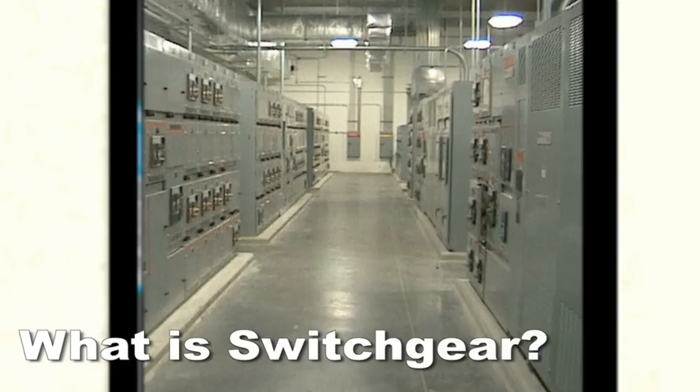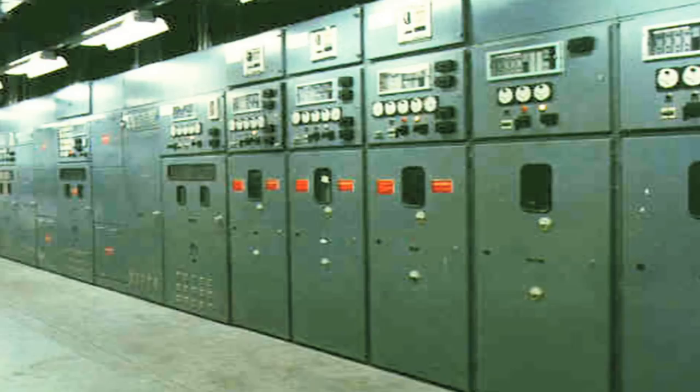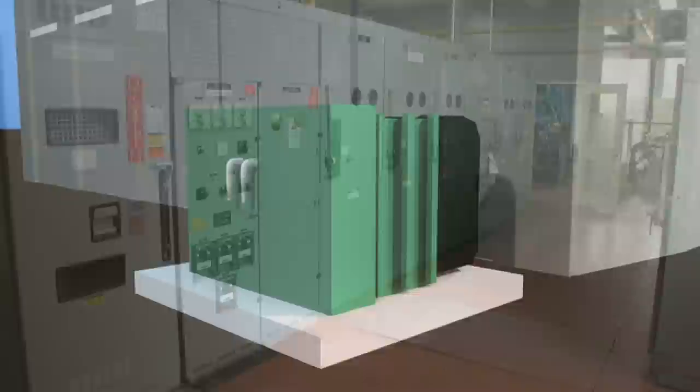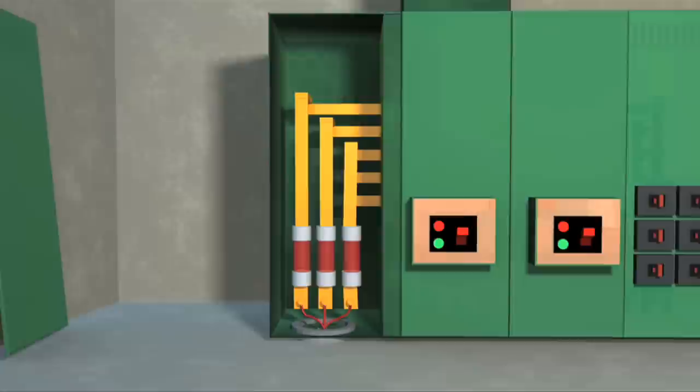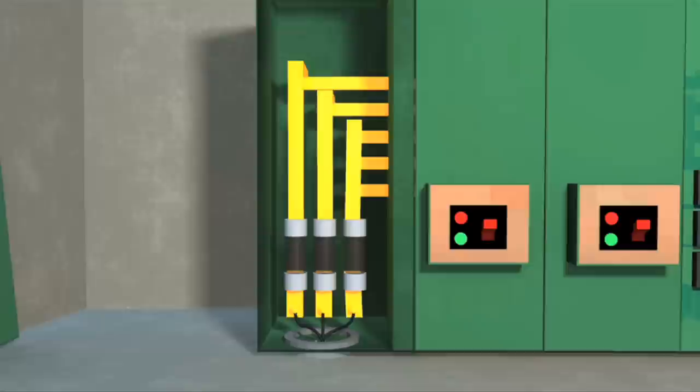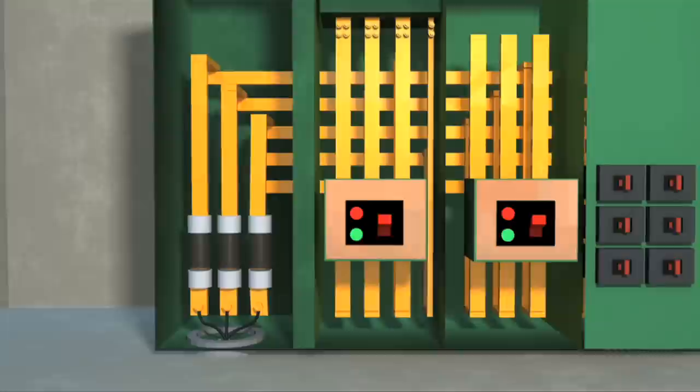What is switchgear? It's the beginning of the electrical distribution system inside the facility located in an electrical room. It is made up of several sections containing switches and or breakers. The first section receives the incoming power from the oil transformer. The wires are connected to a main breaker, or in this example, they are attached to fuses. The fuses are connected to bus bar. Bus bar is either made up of copper or aluminum.